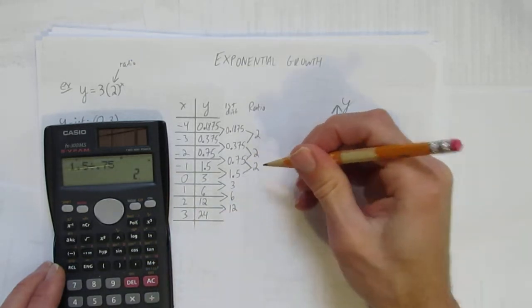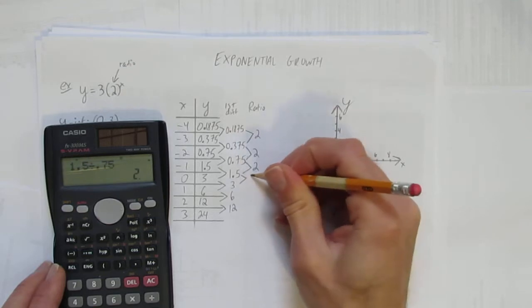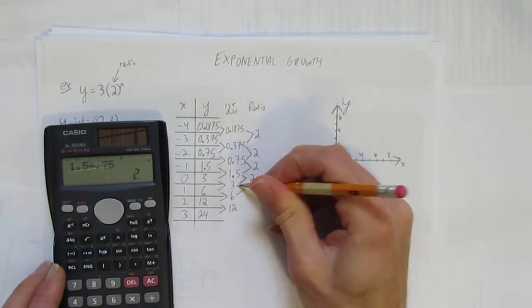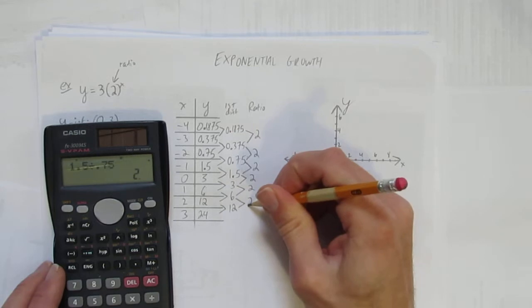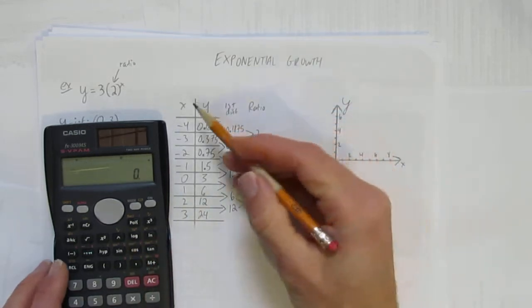I can probably do them in my head now. What's 3 divided by 1.5? 2. What's 6 divided by 3? 2. What's 12 divided by 6? 2. And that proves it's a ratio that is exponential.